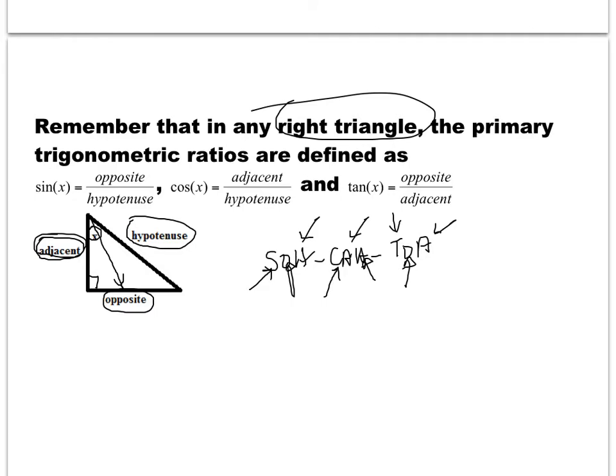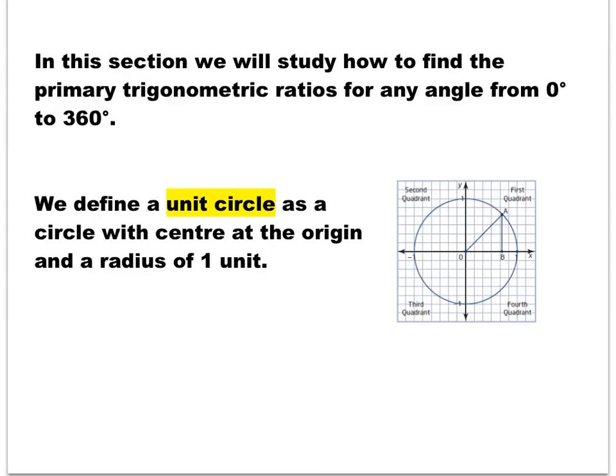In this section and unit, we are going to find a way to determine the primary trig ratios for any angle between 0 and 360 degrees.